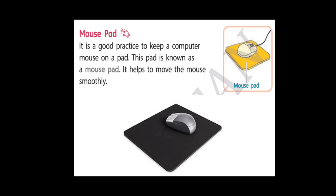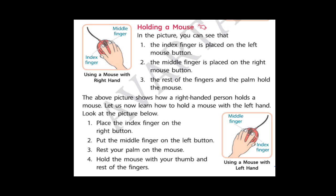Let's read about the mouse pad. Why do we use a mouse pad? Because a mouse pad helps us to work smoothly and move the cursor smoothly. It is a good practice to keep a computer mouse on a pad. This pad is known as a mouse pad. You can see here the black colored mouse pad. It helps us to move the mouse smoothly.